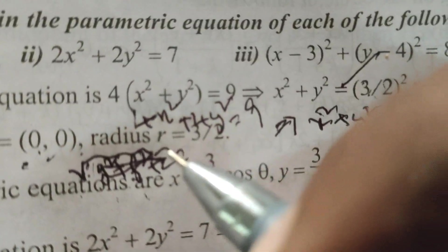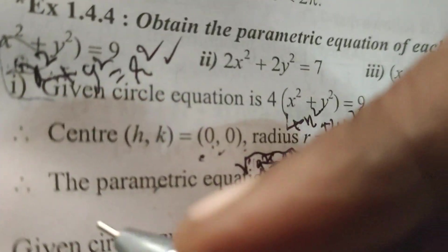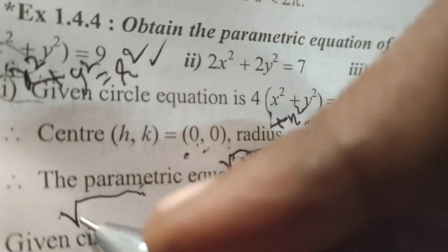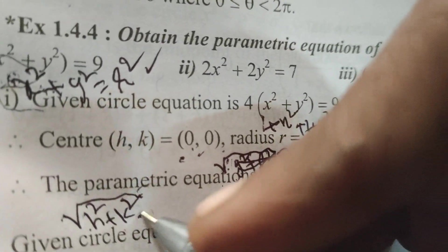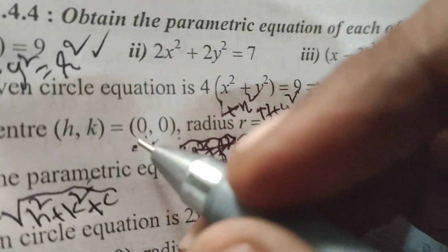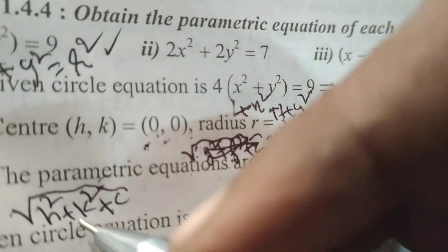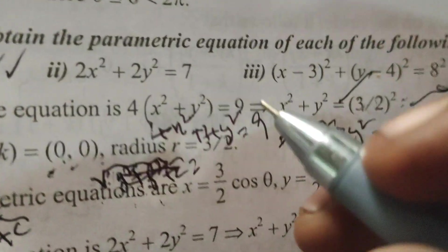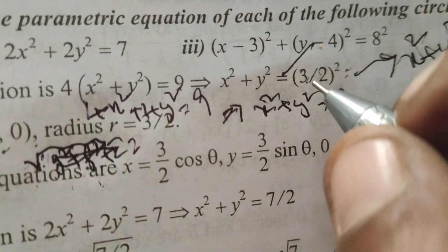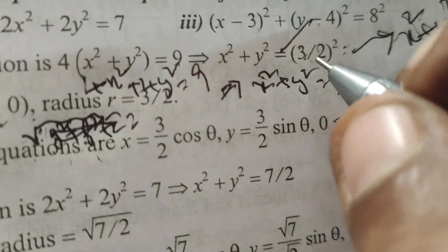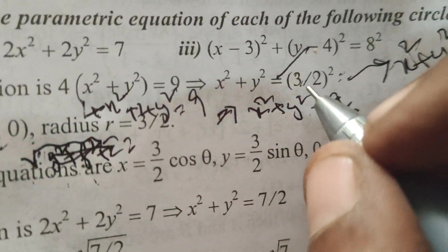So, radius means, here find out radius means, choose the formulae, root of h square plus k square plus c. 0 square plus 0 square, that is 0 plus 0, 0. So, here c means minus 3 by 2. So, here r, r means 3 by 2.